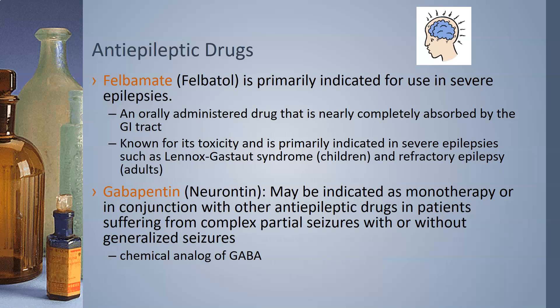Felbamate, or Felbatol, is primarily indicated for use in severe epilepsies. It is orally administered and nearly completely absorbed by the GI tract. It is indicated in severe epilepsies such as Lennox-Gastaut syndrome in children and refractory epilepsy in adults. Gabapentin, also known as Neurontin, may be indicated as monotherapy or in conjunction with other anti-epileptic drugs in patients with complex partial seizures with or without generalized seizures. It is a chemical analog of GABA.